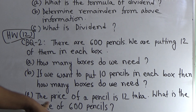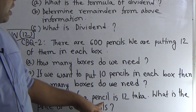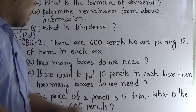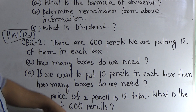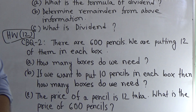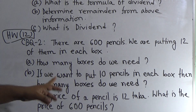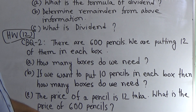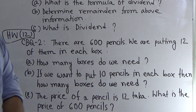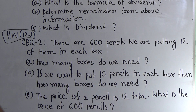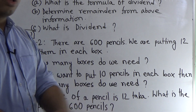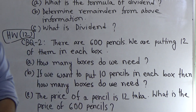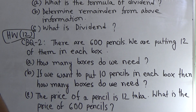Part C: The price of a pencil is 12 taka. What is the price of 600 pencils? Easy question — the price of one pencil is 12 taka, so the price of 600 pencils: we do the multiplication of 600 and 12 and we get the required amount in taka.